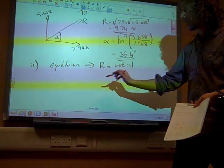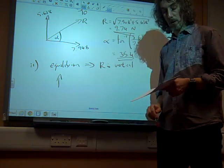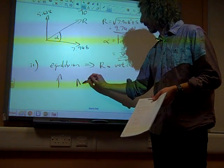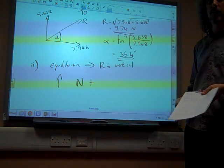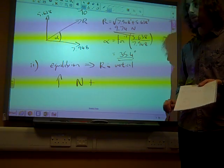So, we've got, if we resolve vertically, we've got the normal contact force, which I'm going to call N, plus the resultant of my 10 newton and 6 newton forces, which I know is of magnitude 9.74,